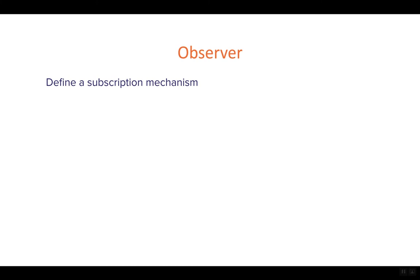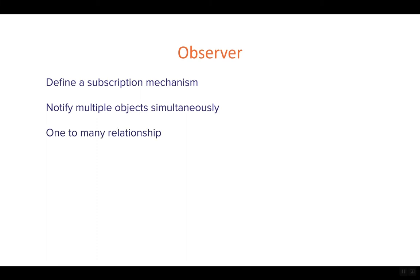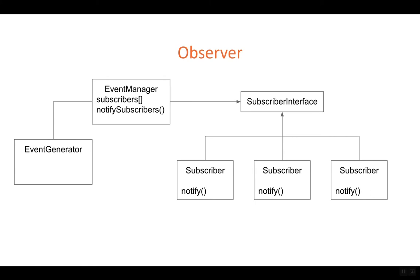The Observer pattern allows a component to be an observer of a service, and the service, as soon as it is updated, will provide a notification to its observers or subscribers. It allows us to notify multiple objects simultaneously — you can have as many observers as you want that are going to be notified. At its core, it defines a one-to-many relationship.